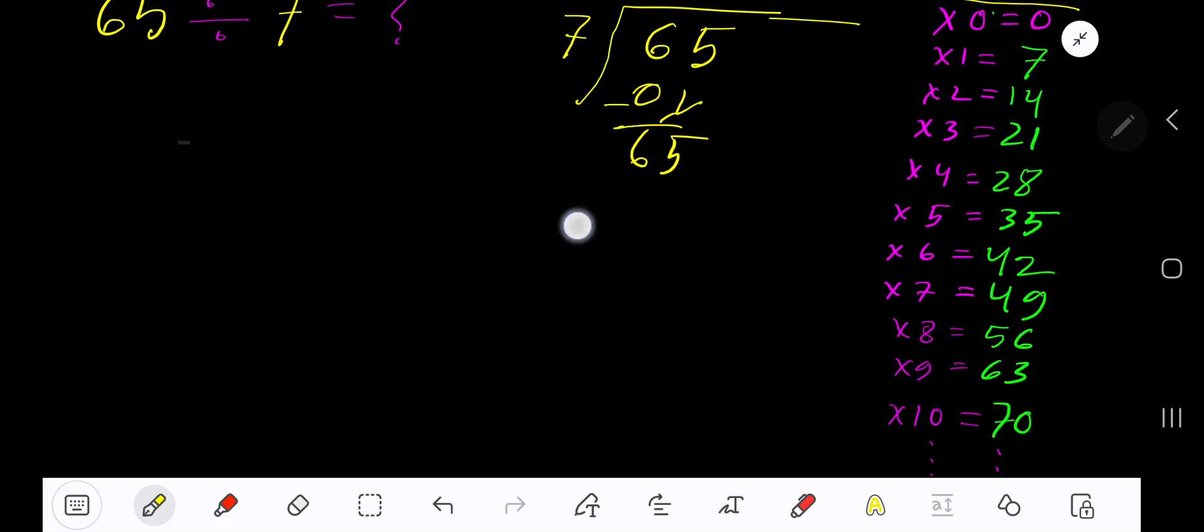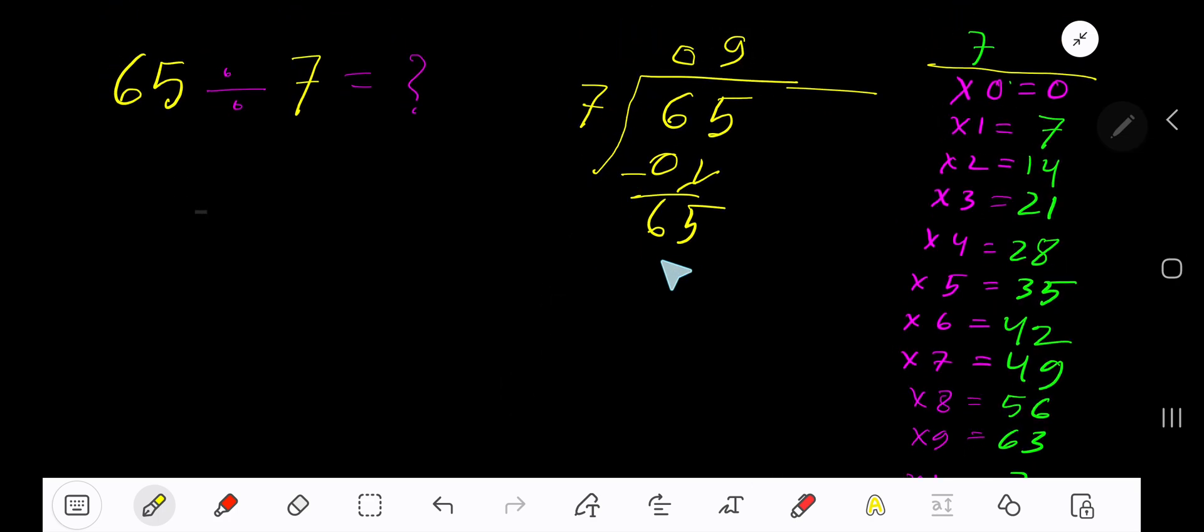So 9 times. 9 times 7 is 63. Subtract to get 2. So our answer is 9 remainder 2.